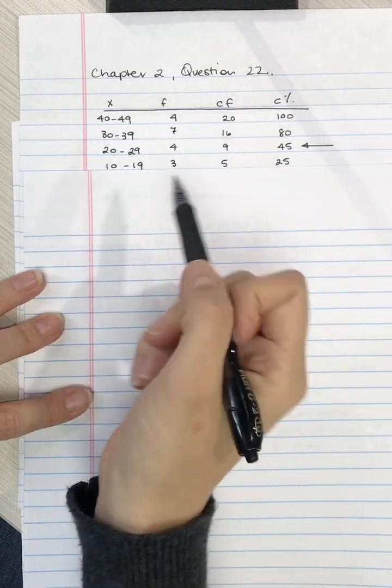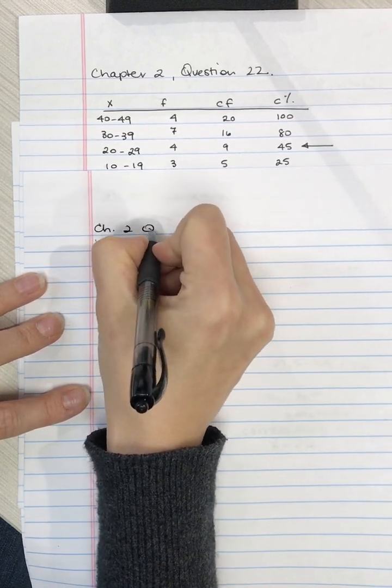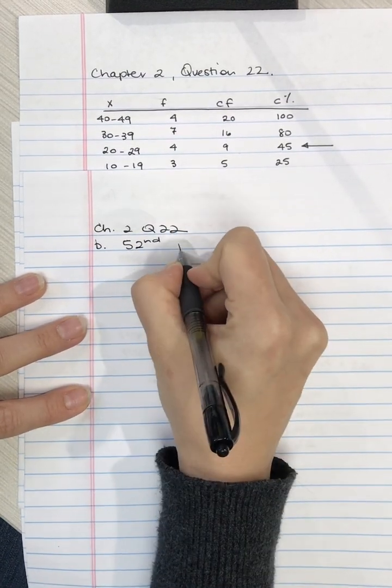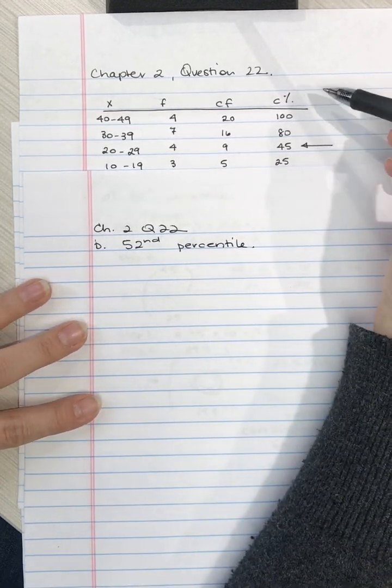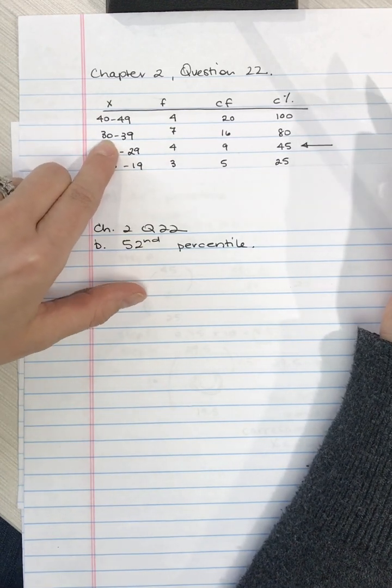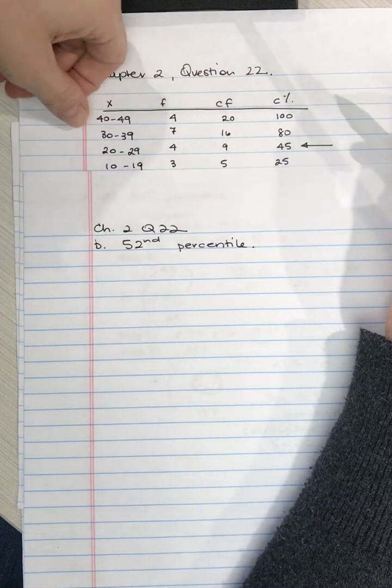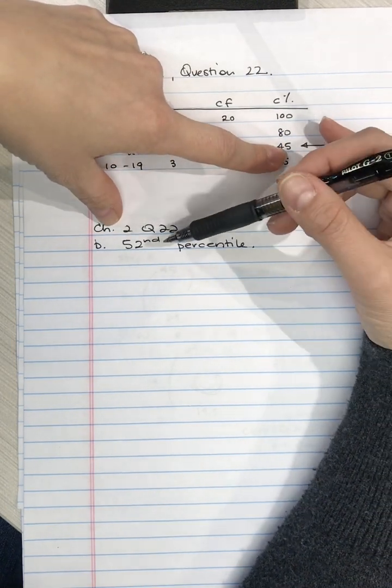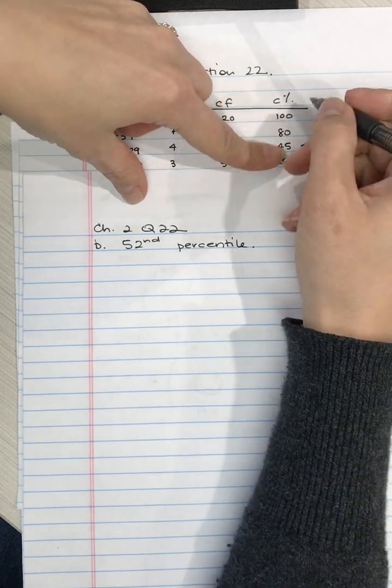Chapter 2, Question 22B asks to find the 52nd percentile. Our first task is to figure out what row we're supposed to be looking at, and we know that it's this interval of 30 to 39, which is actually 29.5 to 39.5, because at 29.5 we're at 45 and we need 45, which is less than 52.